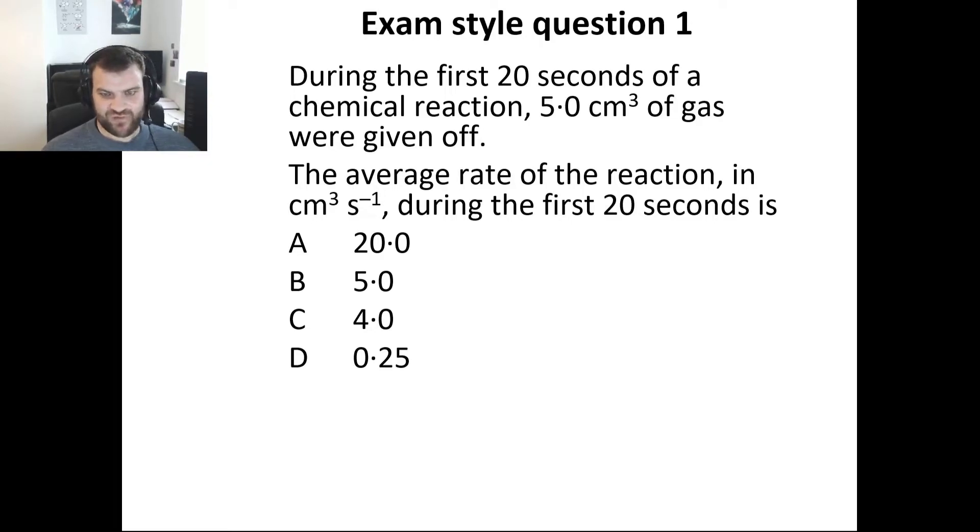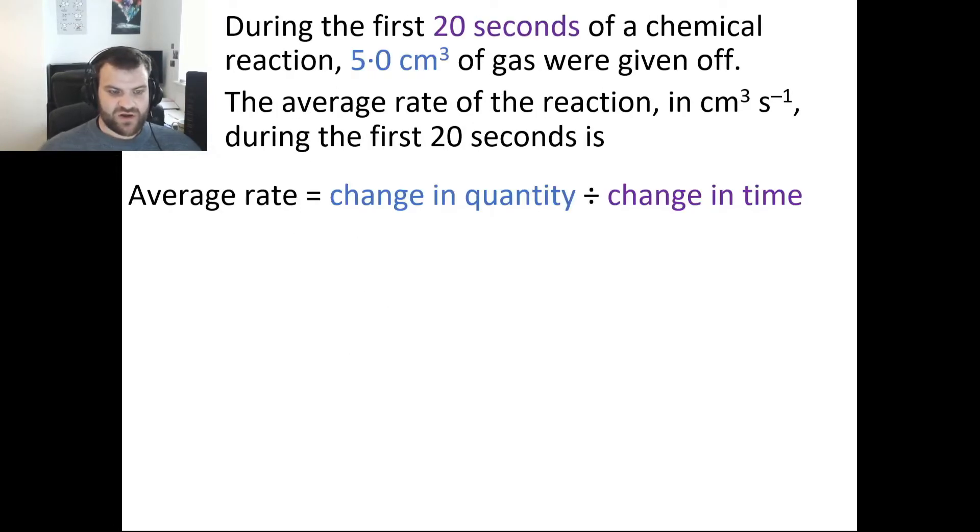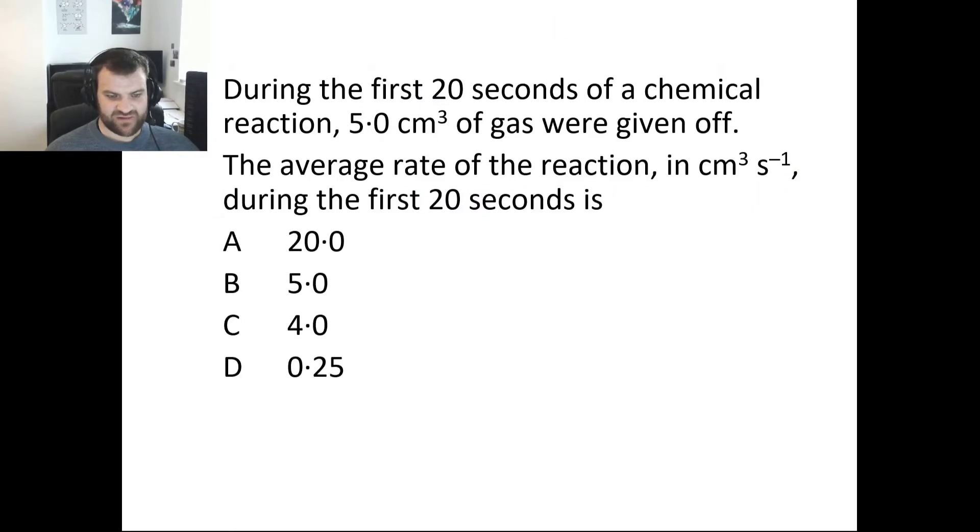You can be asked this in three main different ways. The first way they will just give you the information in a sentence: during the first 20 seconds of a reaction, five centimeters cubed of gas was given off, and they're asking you to calculate the average rate. If we pick out the information we need, we have 20 seconds as our change in time and five centimeters cubed as our change in quantity. The data booklet tells us it's quantity divided by time. 5 over 20 gives you 0.25 centimeters cubed per second, and that makes our answer D from this multiple choice question.